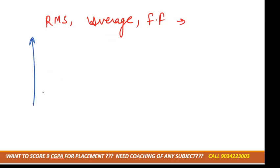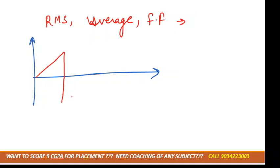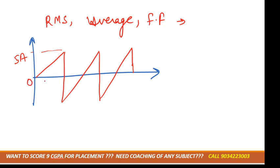Next, we have a circuit diagram given in the form of a triangular shape as mentioned in the question. The maximum current goes up to 5 amperes, and the waveform starts from 0. The interval between waveforms is 1, going 0, 1, 2, 3, 4. The x-axis is denoted by time, the y-axis by current. We need to calculate the RMS value, average value, and form factor.